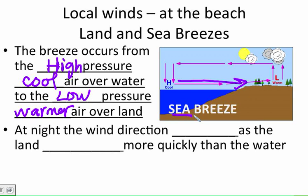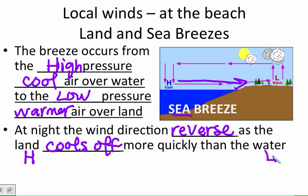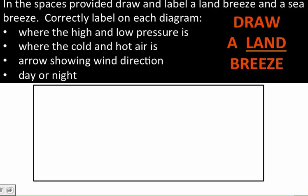Now at night, once the sun sets, we see something different. We notice that the wind direction will reverse. That will occur because what we know is the land then starts to cool off. It cools off much faster than the water, so our land ends up being the cool high pressure, and the water ends up being our warm low pressure, causing the direction of the breeze to reverse. So if we work our way back up to the top there, let's draw in our land breeze.